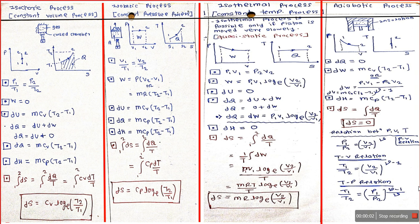This is a very important slide — this is the core while solving all the numericals. Just remember this chart. I'm going to compare all the processes: what is the difference between isochoric, isobaric, isothermal, and adiabatic. All four processes are kept in front of you so you can compare the basic five formulas simultaneously.